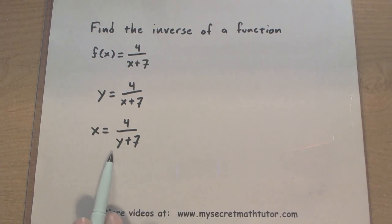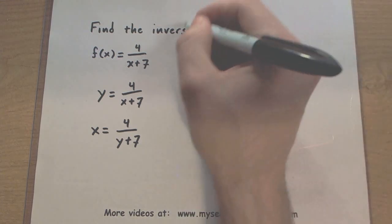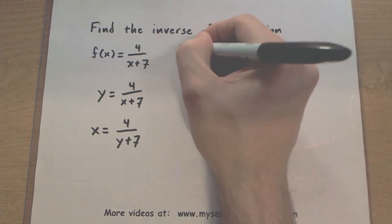Now, we're going to go ahead and try and solve for the y. Notice how it's at the bottom of a fraction. So, we're going to multiply both sides by y plus 7.